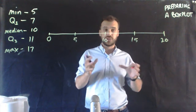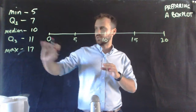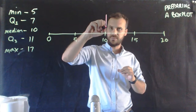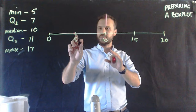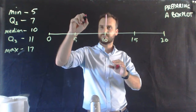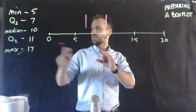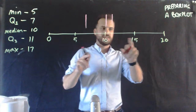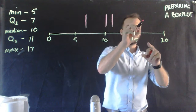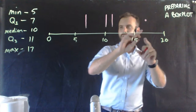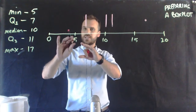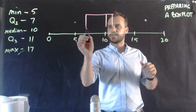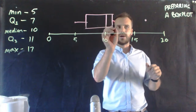I'm just going to use a different colour to draw my actual box plot. The way I like to start is with wherever the median is, so the median just happens to be 10. Q1 is 7 — so 5, 6, 7 about here. Q3 is 11, here. Max is 17 — 16, 17. And minimum is 5. Then we just put this all together: here's our box, and here are our whiskers.